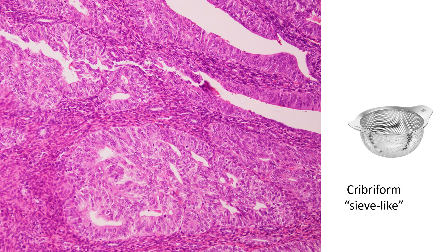Here's a higher-power view of a cribriform space. Cribriform really means sieve-like. Here you have one glandular space, and within that space you have epithelium separating multiple lumens, giving it a look that resembles a sieve. This is what we mean by cribriforming, and this is a type of architectural complexity that should push you towards calling carcinoma.